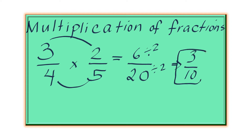Very simple, straightforward. Just multiply across top to top. 3 and 2 equals 6. And then denominators 4 and 5 equals 20. And then just reduce it.